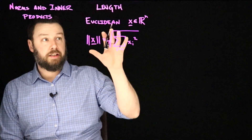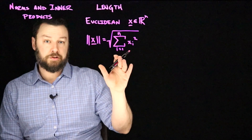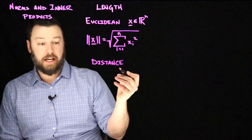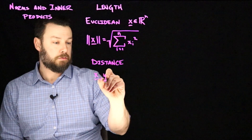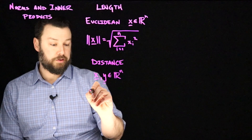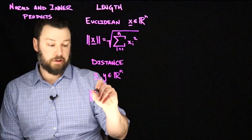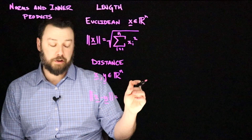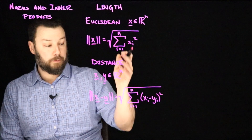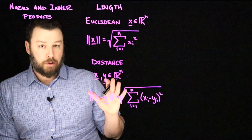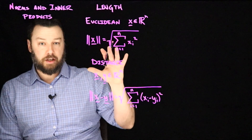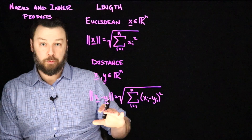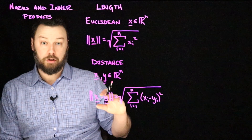This is nice because in addition to talking about length, it allows us to talk about the distance between two vectors. If I have x and y both in R^n, I can write down their distance using double bars — that's going to be the length of the difference between the two vectors. When we abstract away from Euclidean spaces, we can think about things more generally and come up with other kinds of things we call norms.